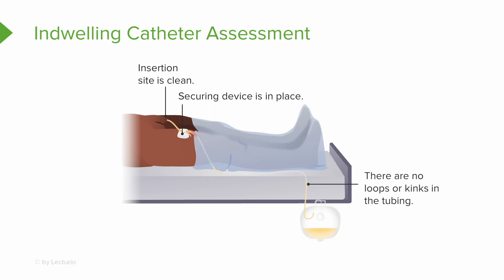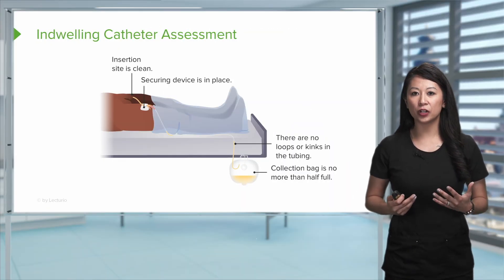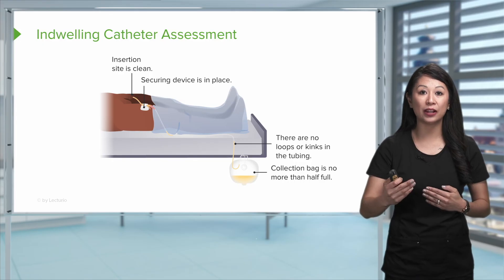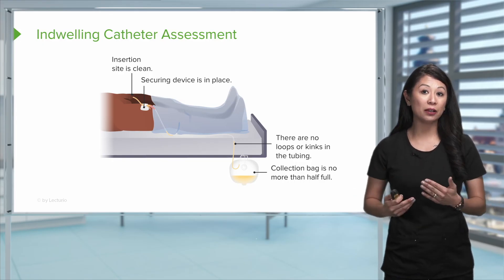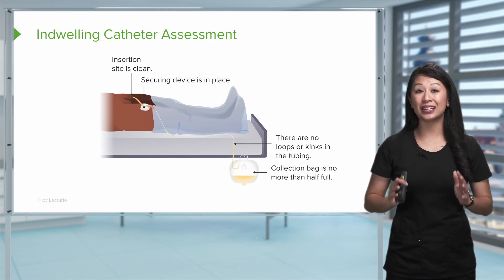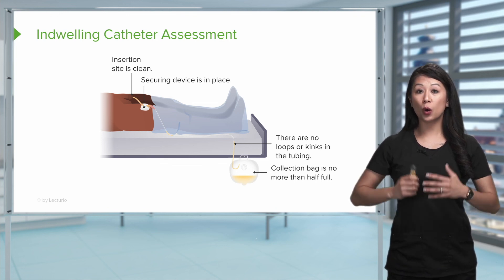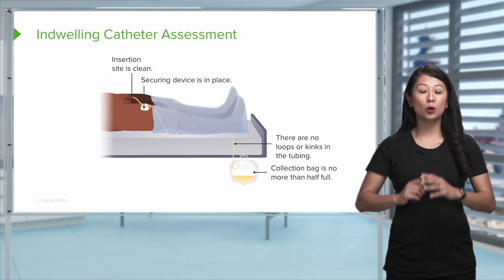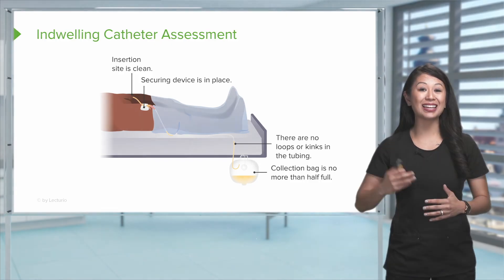Going down the tubing, make sure every time you walk into the patient's room there are no loops or kinks in the tubing. Don't forget about the patient's collection bag — if the bag fills up and there's too much urine and we don't empty it regularly, that urine can back up through the tubing into the patient's bladder, which is a big deal and can cause urinary tract infections. Make sure when you assess the collection bag it's no more than half full, and when it reaches that point, empty it appropriately and document.